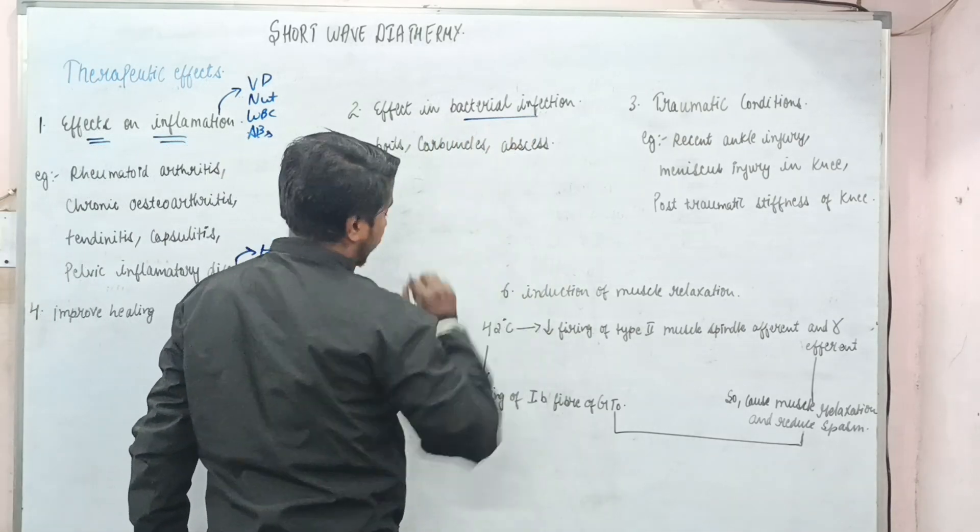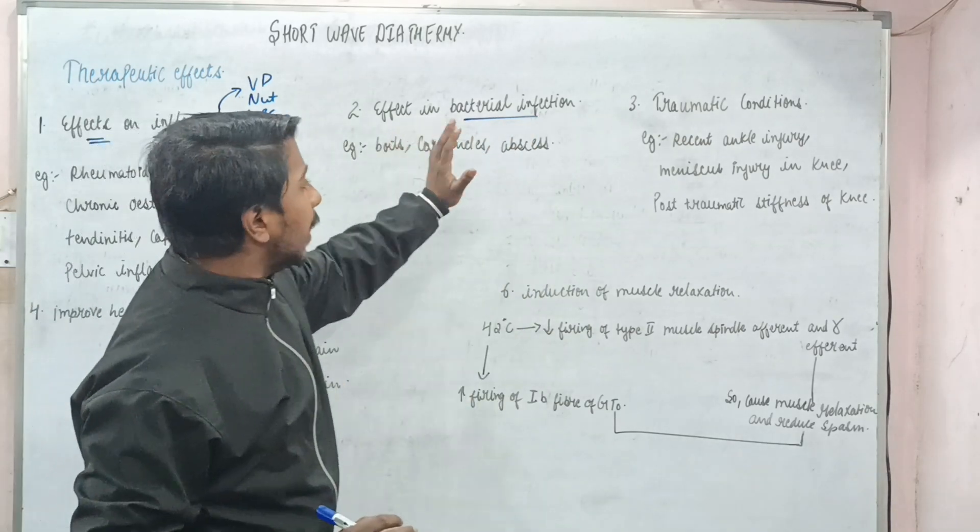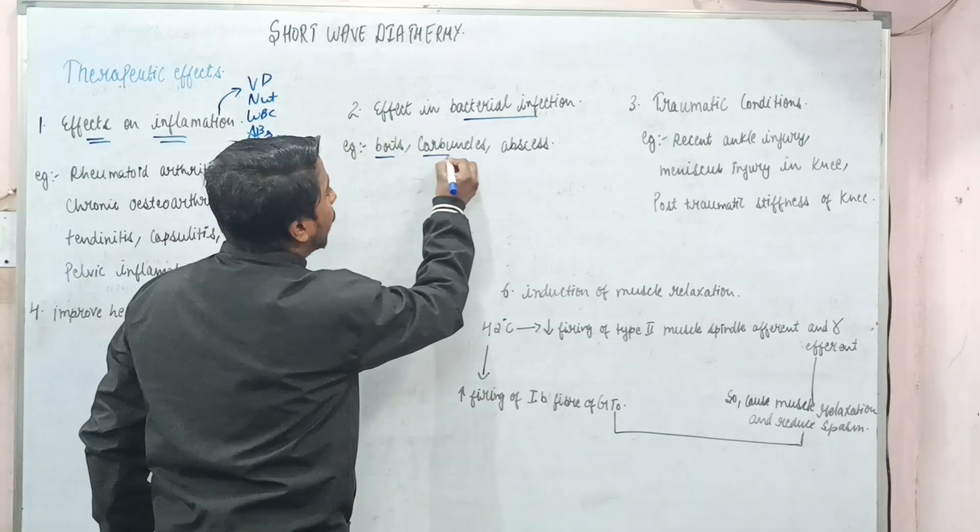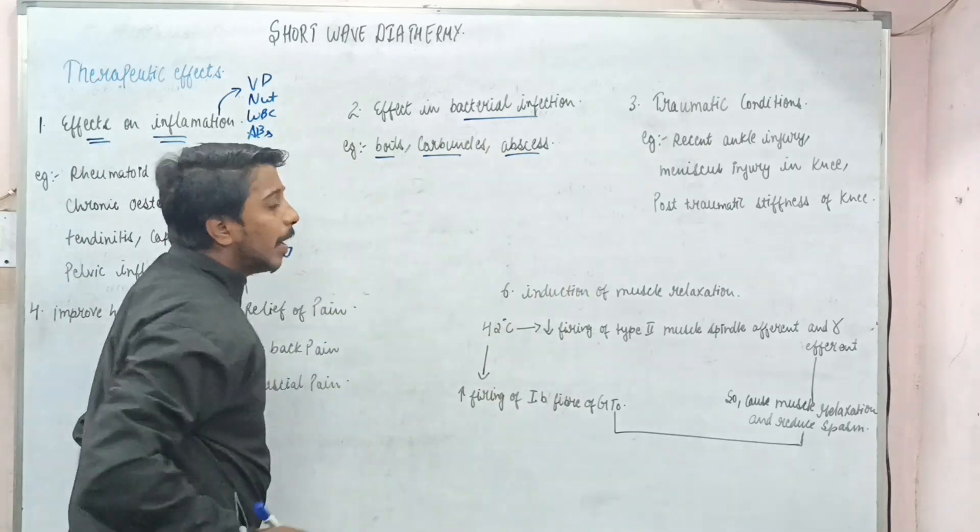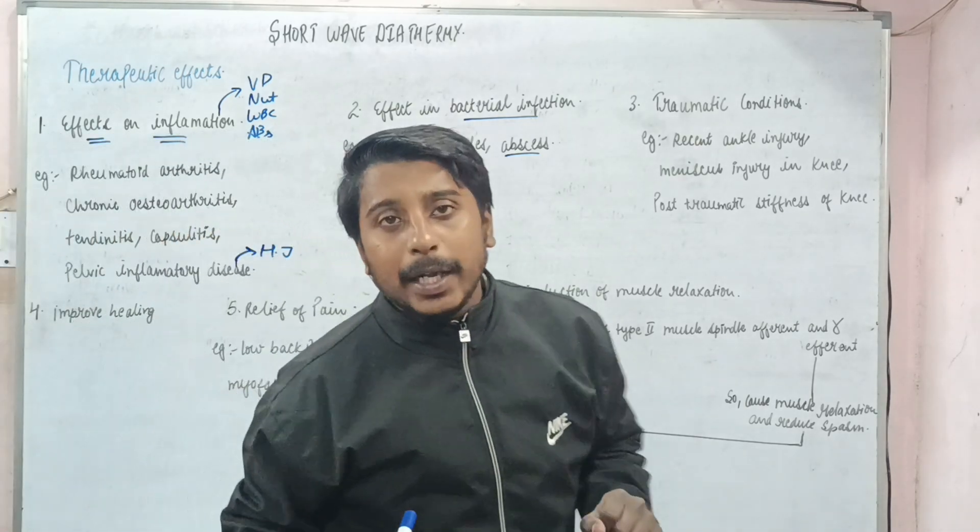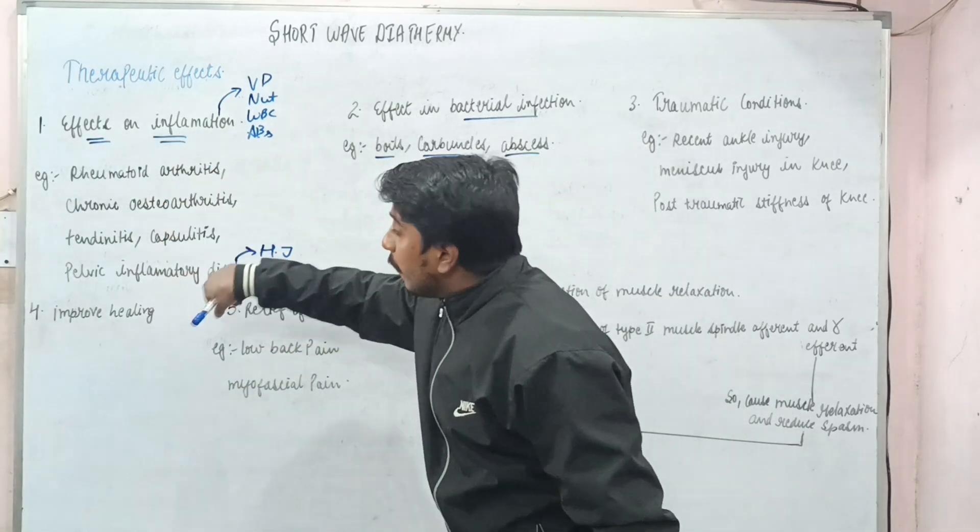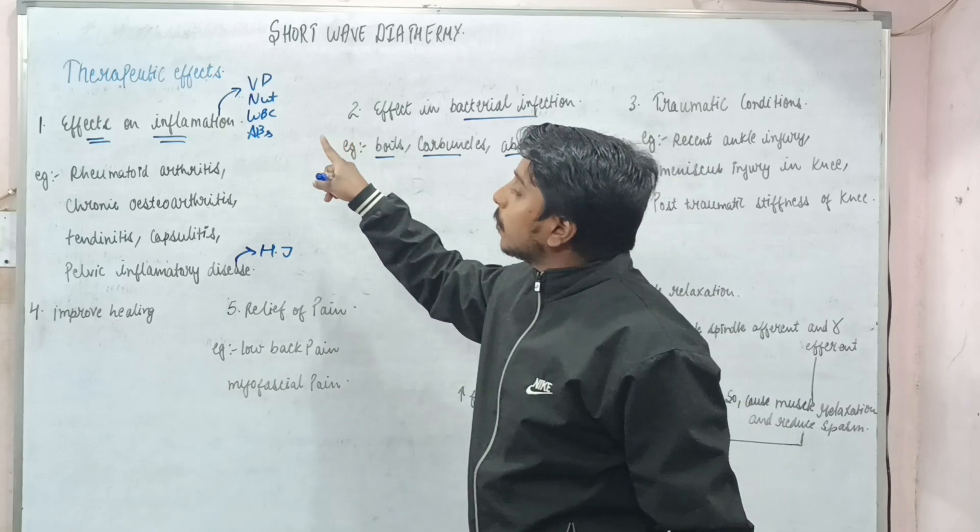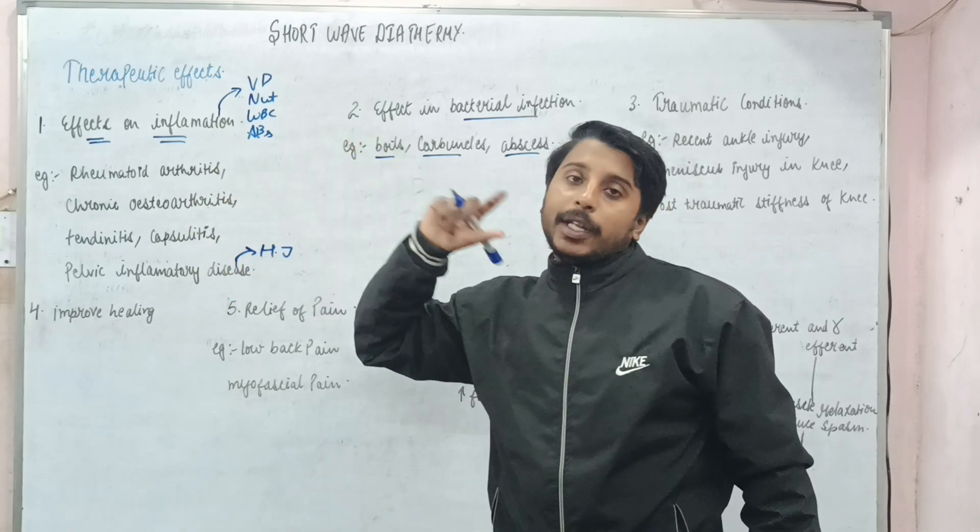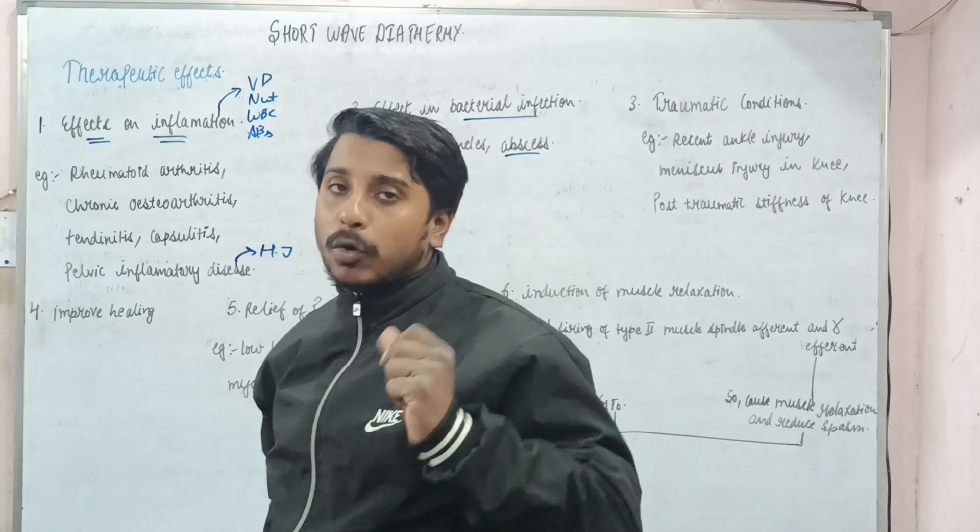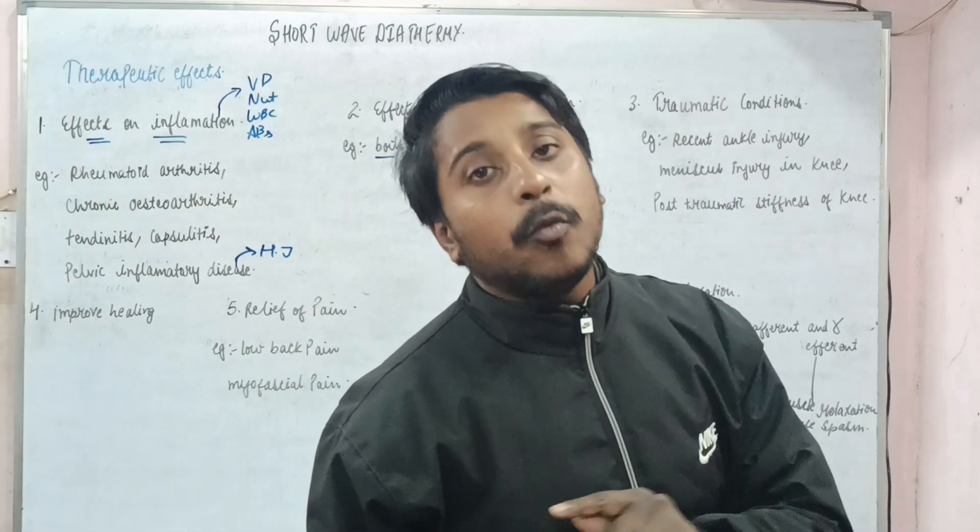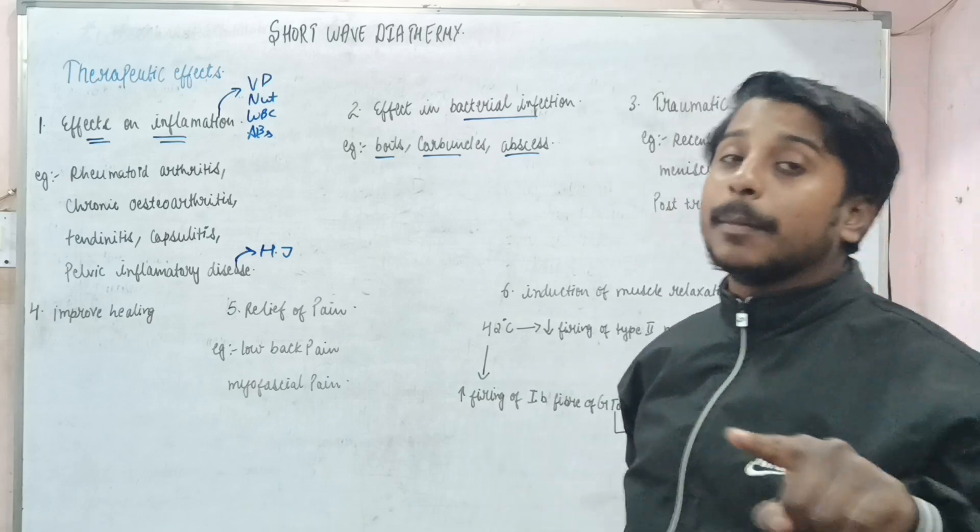Similarly in bacterial infection - examples include boils, carbuncles, or any sort of abscess. Let me clear one more point. In case of inflammation, I've talked about chronic inflammation. In case of acute, can we use shortwave diathermy? Yes, but there we will use pulsed shortwave diathermy (PSWD).